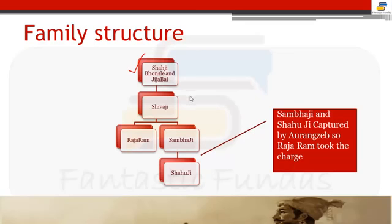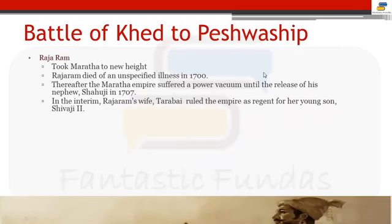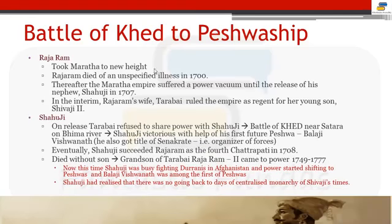When Sambhaji and Shahuji were captured by Aurangzeb — Aurangzeb was ruling from 1658 to 1707 — they could not become king. So Rajaram became the king and took Marathas to a new height. Rajaram died of unspecified illness in 1700. From 1700 to 1707 — when Bahadur Shah released Shahuji — there was nobody to rule.